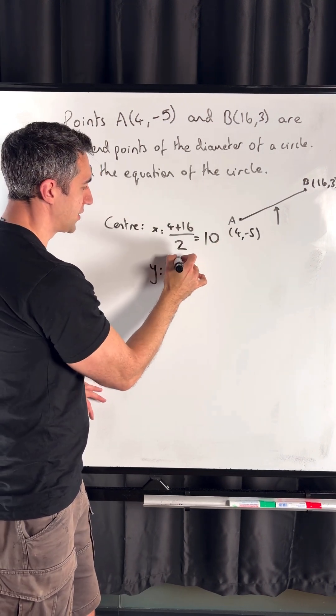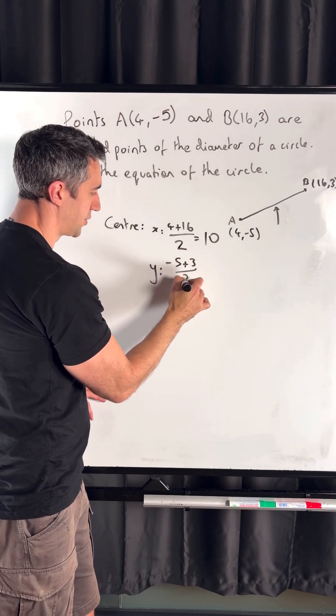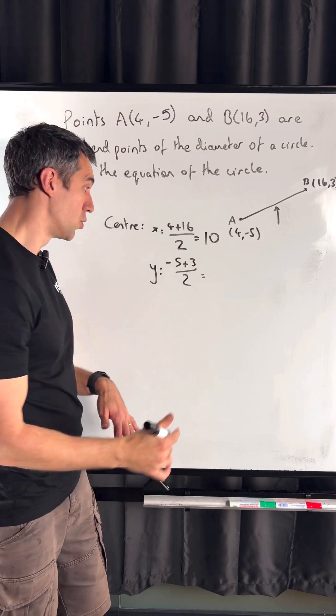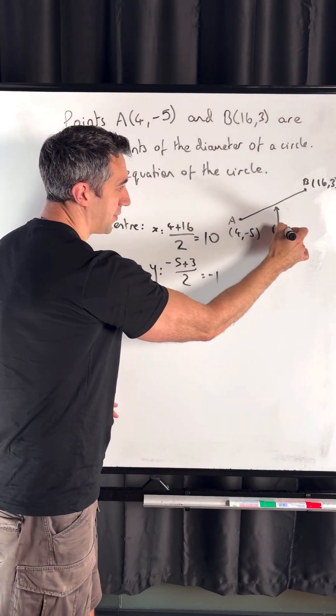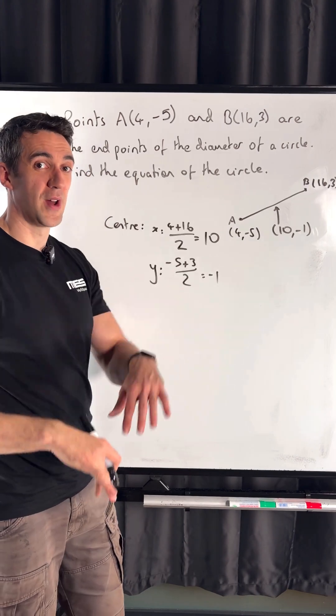For y, (-5 + 3)/2 = -2/2 = -1. So the center is at (10, -1), and we're halfway there.